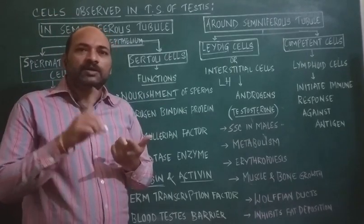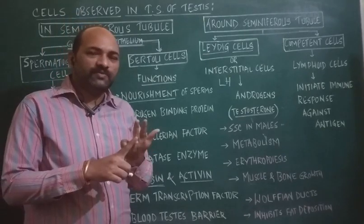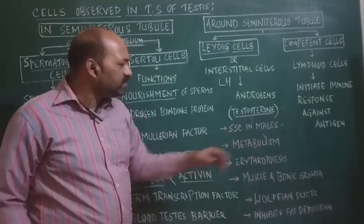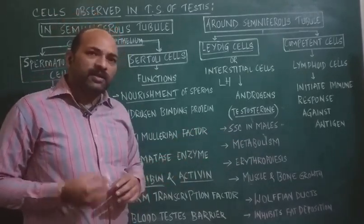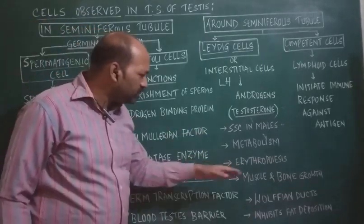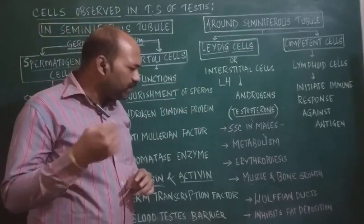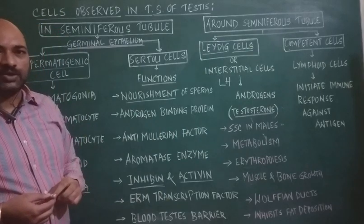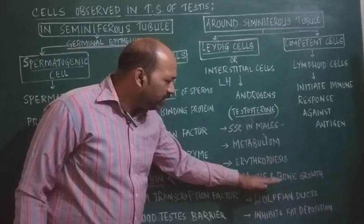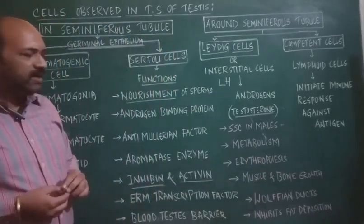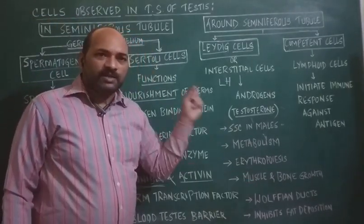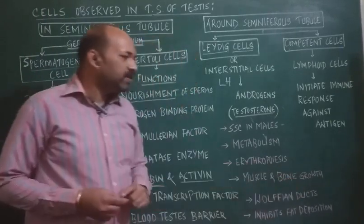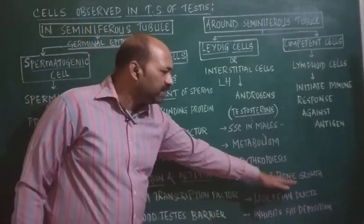Androgens are involved in maintaining secondary sexual characters in males such as growth of facial hair, broadening of the pectoral girdle, deepening of the voice, formation of the Adam's apple, and growth of the penile region. The second function of androgens is involvement in metabolic activities — both catabolic and anabolic reactions. Androgens also stimulate erythropoietin and thereby help in erythropoiesis, that is production of RBCs. Androgens are involved in muscle and bone growth and development, increasing the size of skeletal muscle cells and acting on epiphyseal plates of bones.